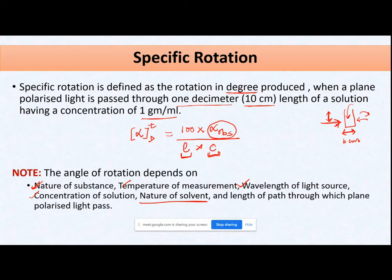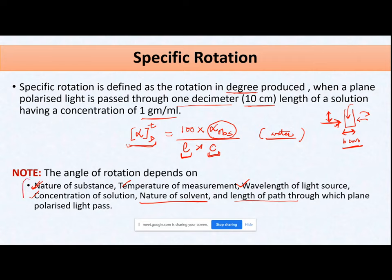Whenever you note specific rotation, you must write the solvent used in brackets. For example, if you are measuring optical rotation in water, you write 'water' there. Similarly, the length of the path through which the plane polarized light is passing — we have fixed it at 10 cm — all these properties affect the specific rotation.